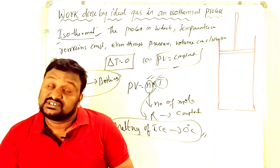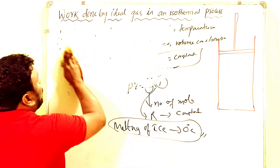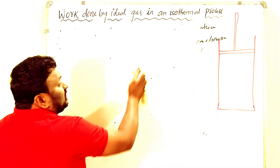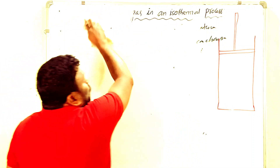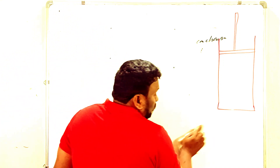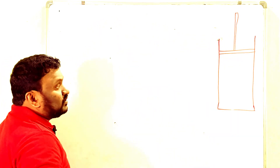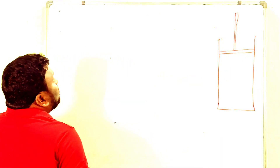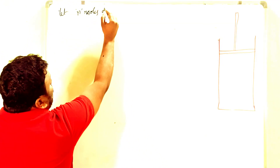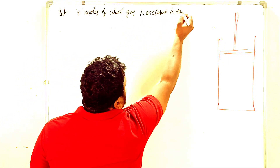Now let us go for the derivation of the work done by an ideal gas in an isothermal process — which formulas we are going to use and how we can derive the expression. We have one container with a movable piston, and let n moles of ideal gas be enclosed in the container.